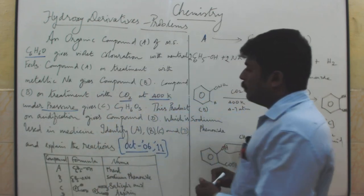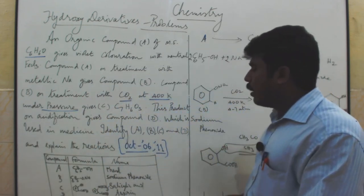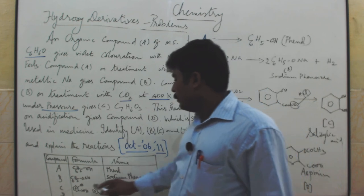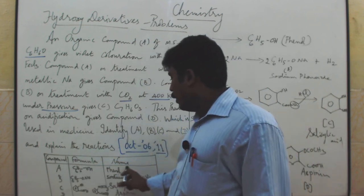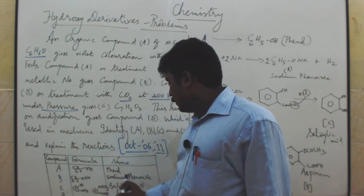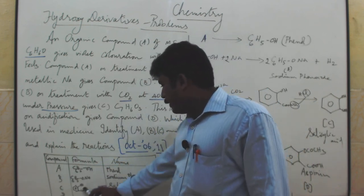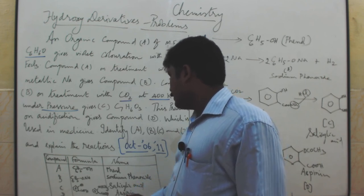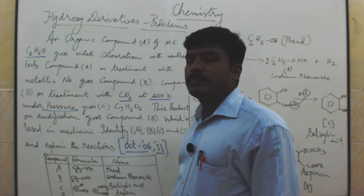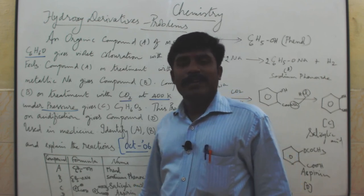Make a table: compound, formula, name. A is phenol, B is sodium phenoxide, C is salicylic acid, D is aspirin.